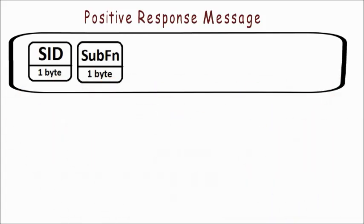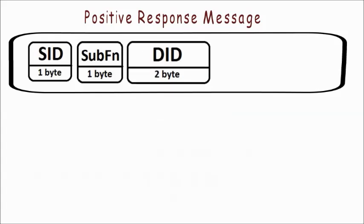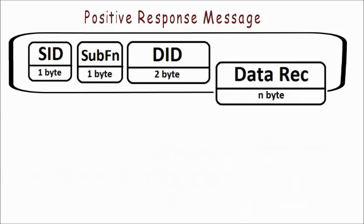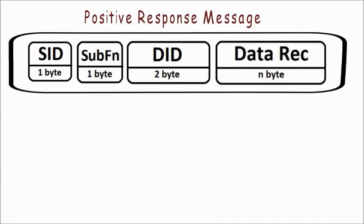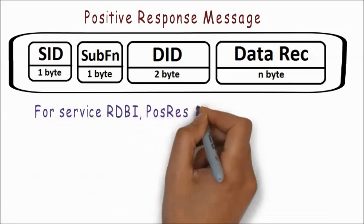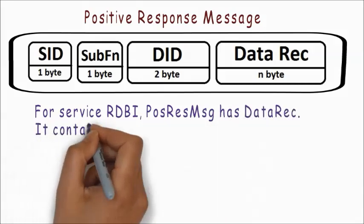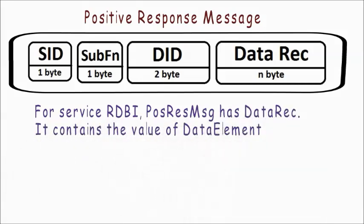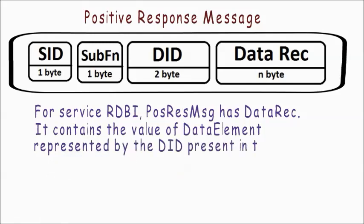Then comes the data identifier, which is 2 bytes. This is also exactly the same as the data identifier field present in the service request message. This DID is followed by the data record field, which is optional to the service. For example, for the service Read Data By Identifier, the positive response message has a data record which contains the value of the data element represented by the DID present in the request message.